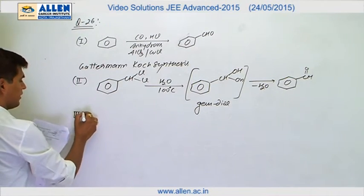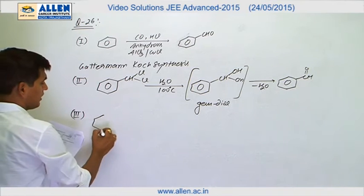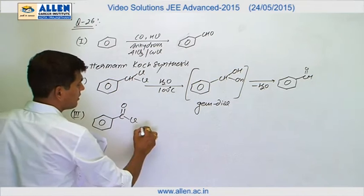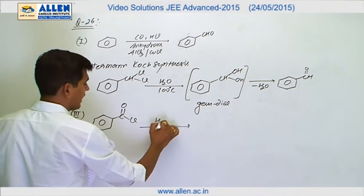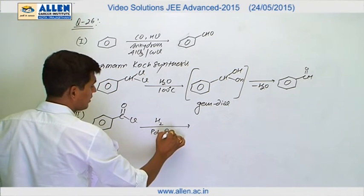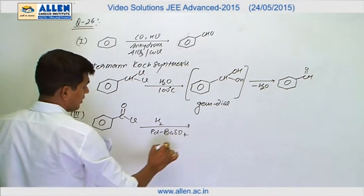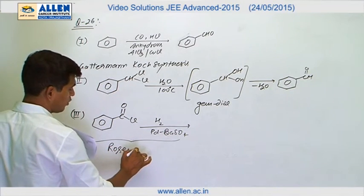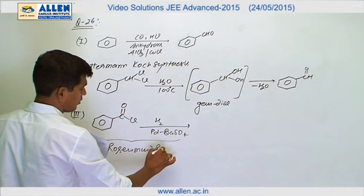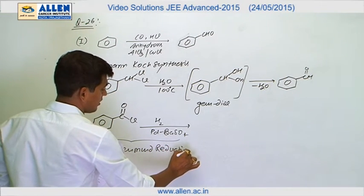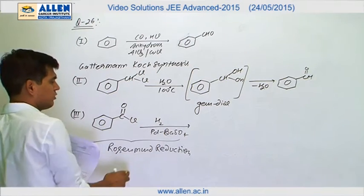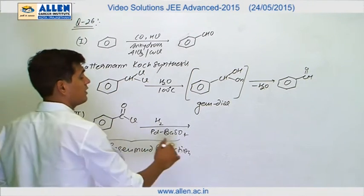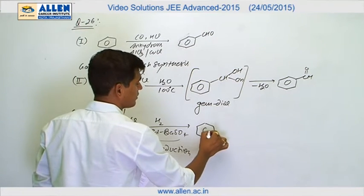Now the third reaction — again a very popular reaction. We have benzoyl chloride along with H2/Pd-BaSO4. This reaction is known as Rosenmund Reduction. In Rosenmund Reduction, catalytic hydrogenation — poisoned hydrogenation — of the acid chloride (COCl) takes place.